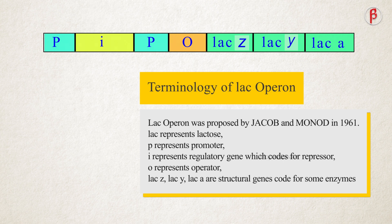P indicates promoter, O indicates operator, i indicates the regulator gene. The structural genes are called lac z, y, a.